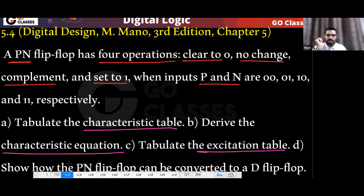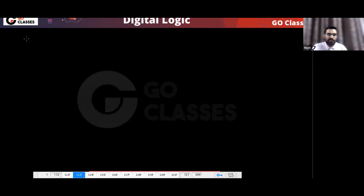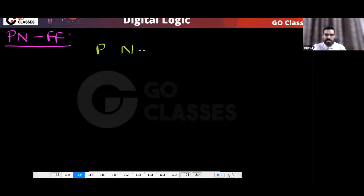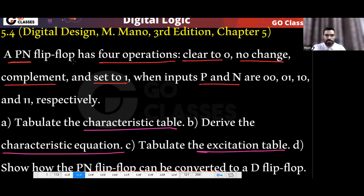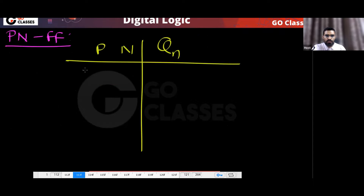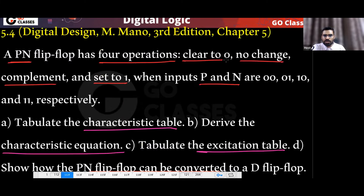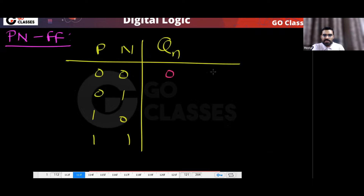This PN flip-flop is given to us. So let's understand it. This is P, this is N. The question gives us the characteristic table. When P and N are 0-0, then clear to zero — that is reset. When P-N is 0-1, then no change.